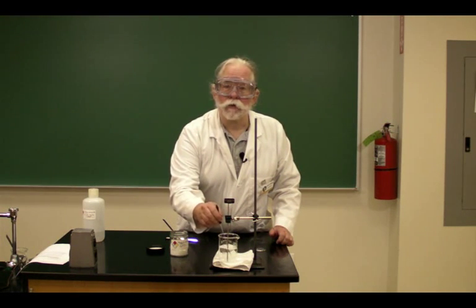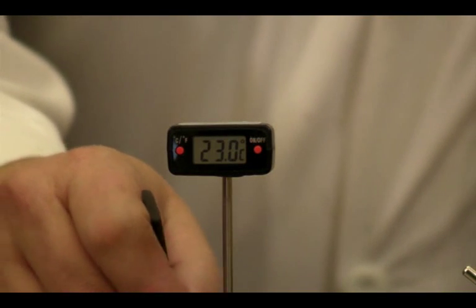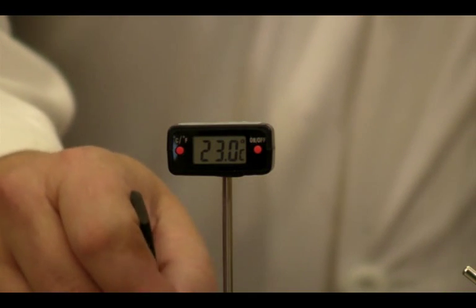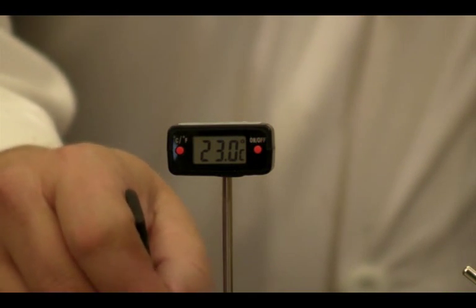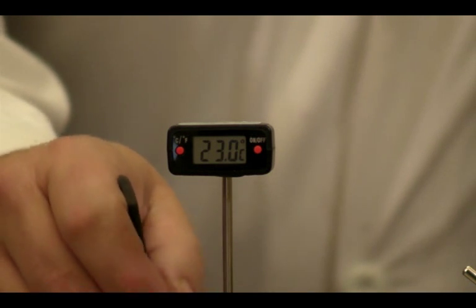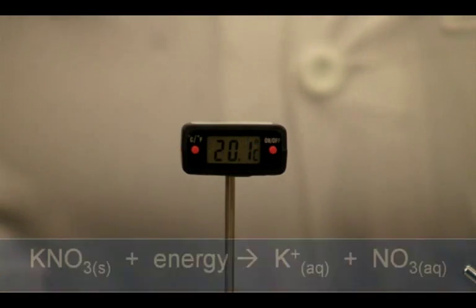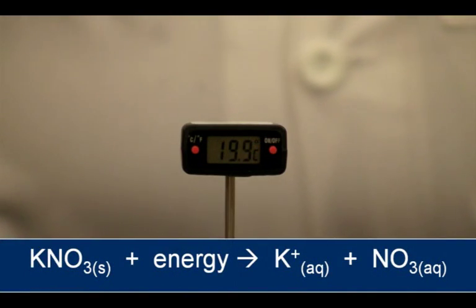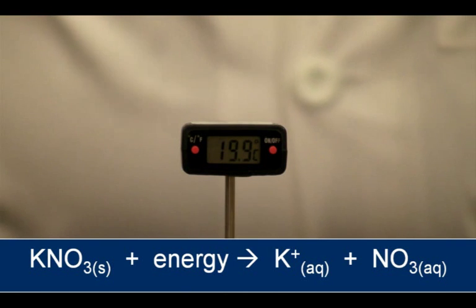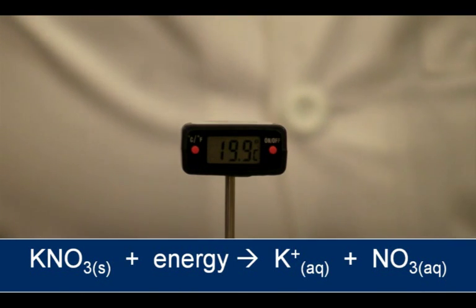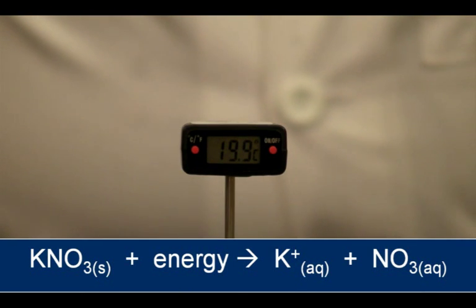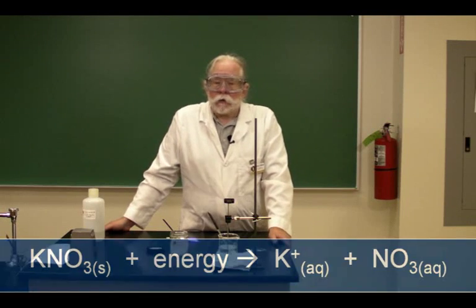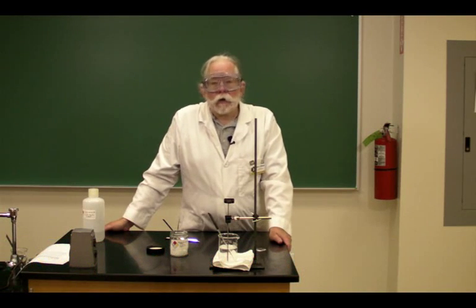As the water molecules bump into the crystal and pull ions out of the crystal, the process takes energy out of the water. Potassium nitrate takes energy to break into potassium ions and nitrate ions in the water. This is called an endothermic reaction.